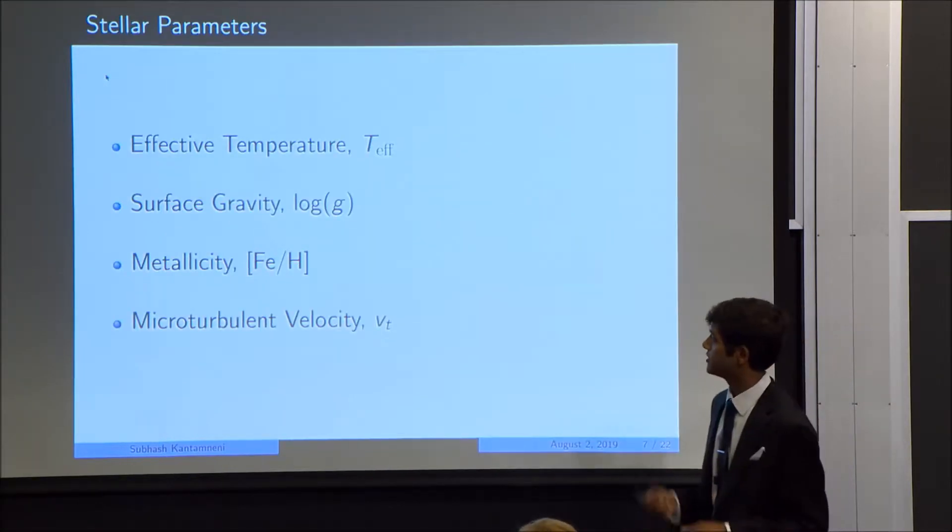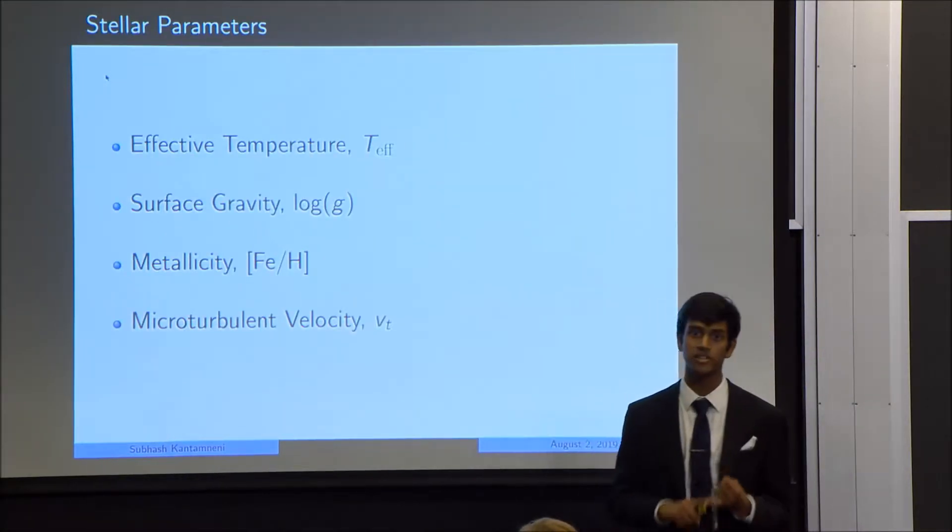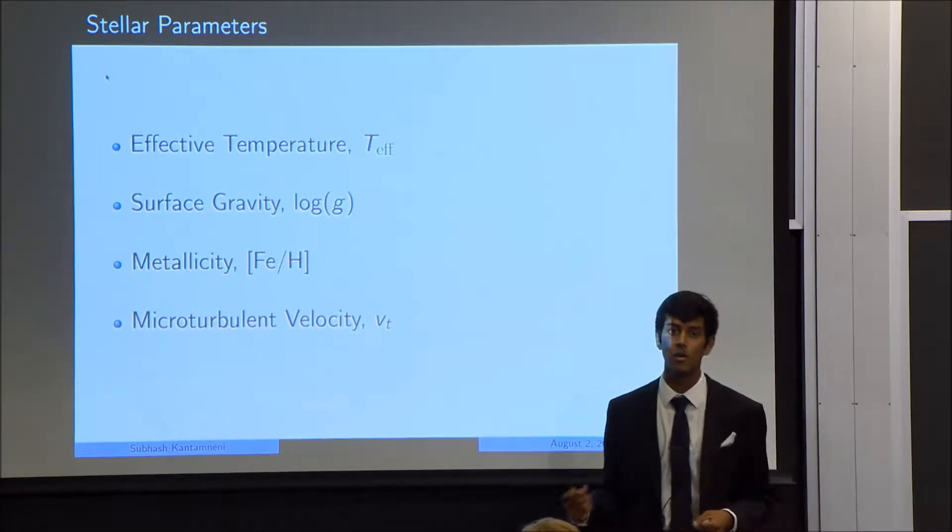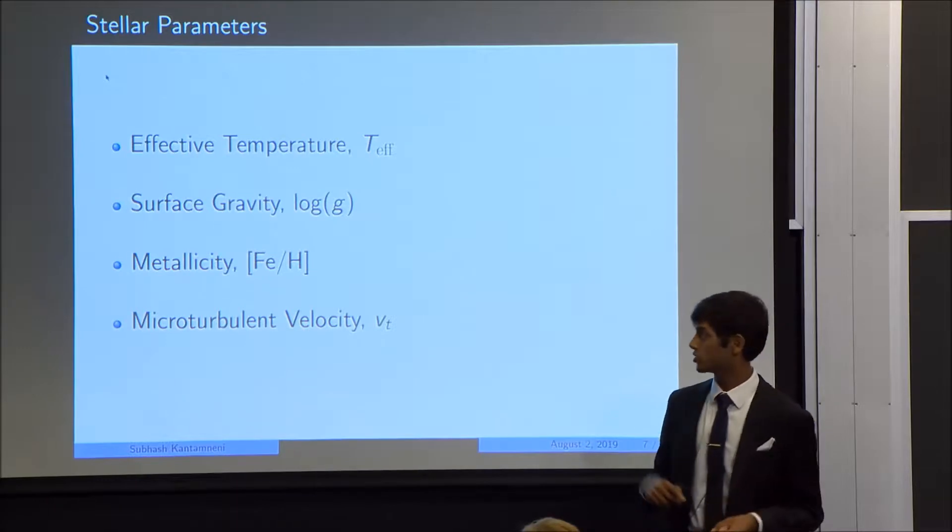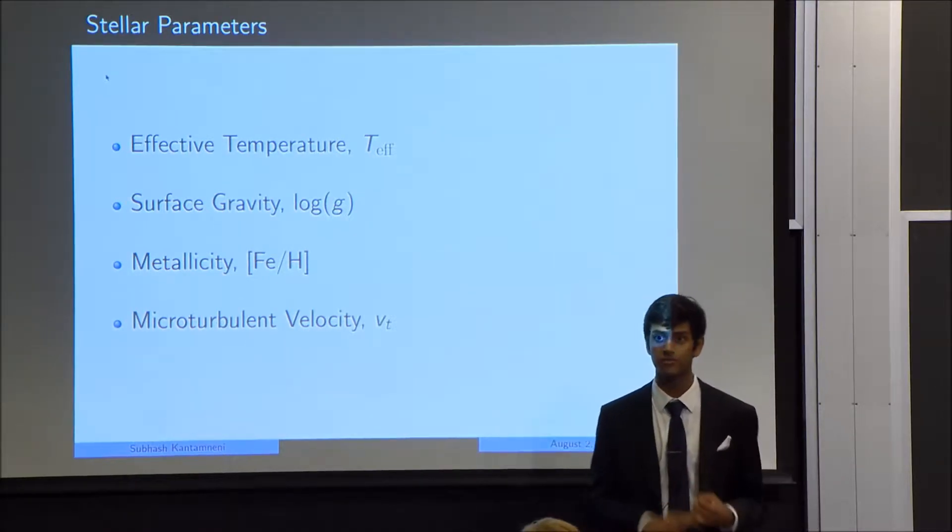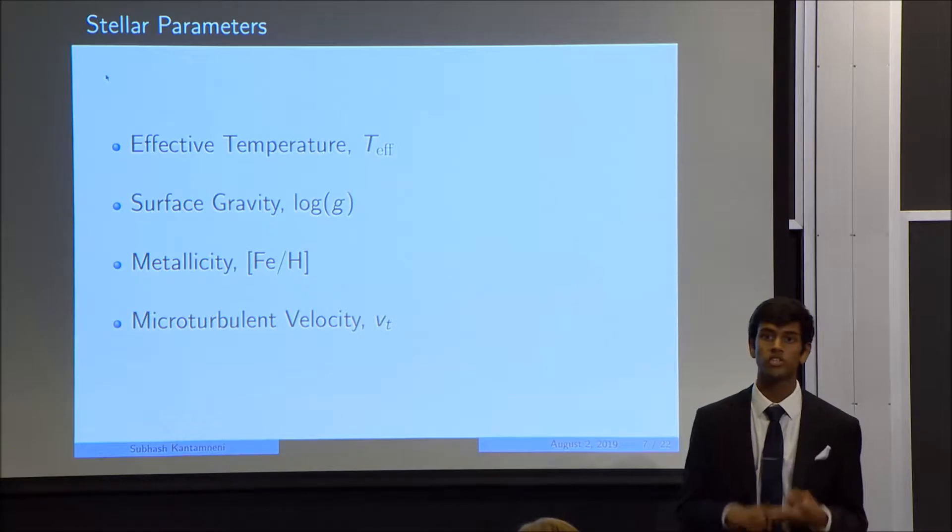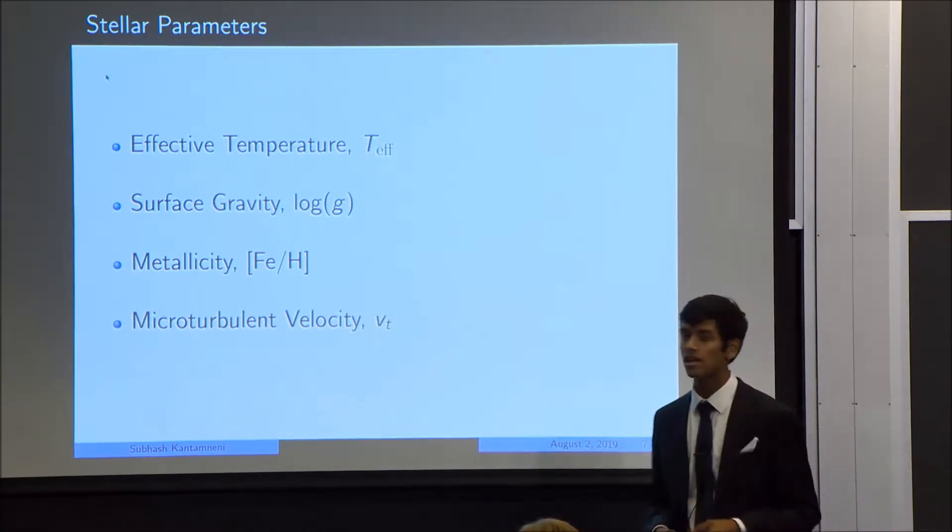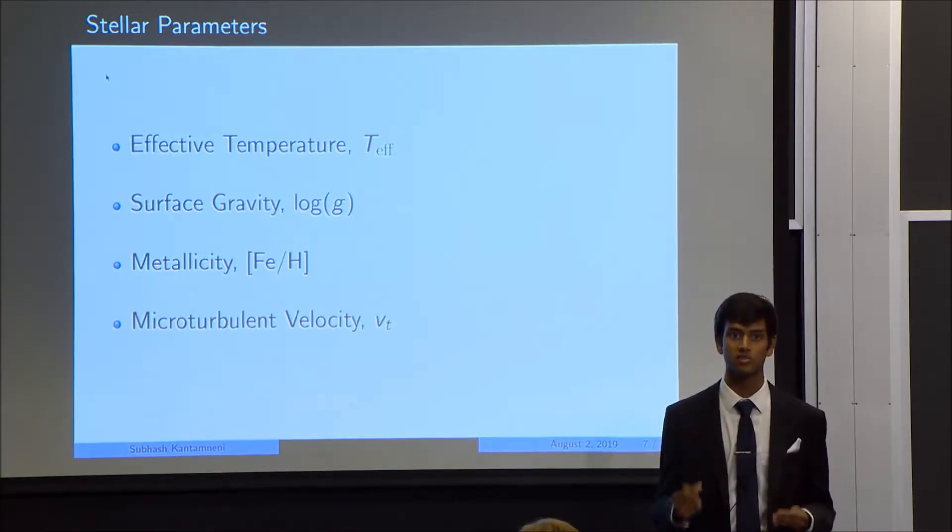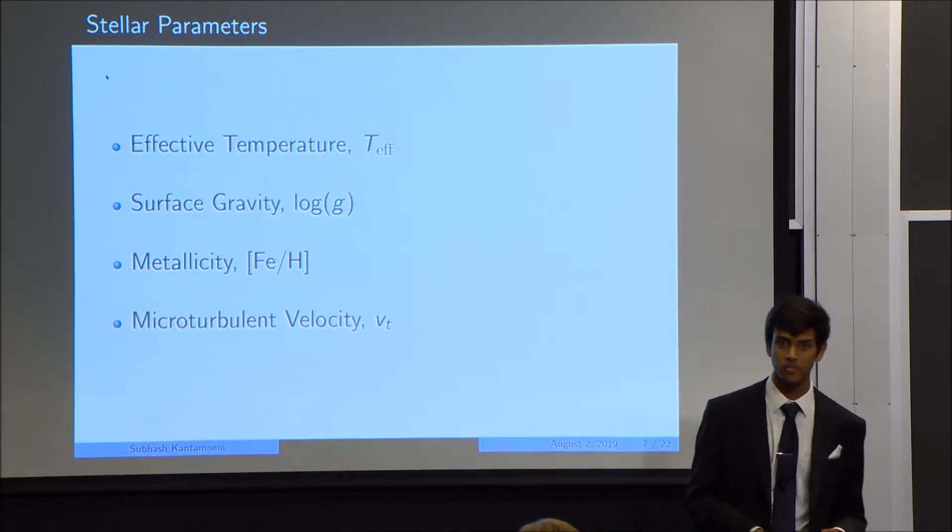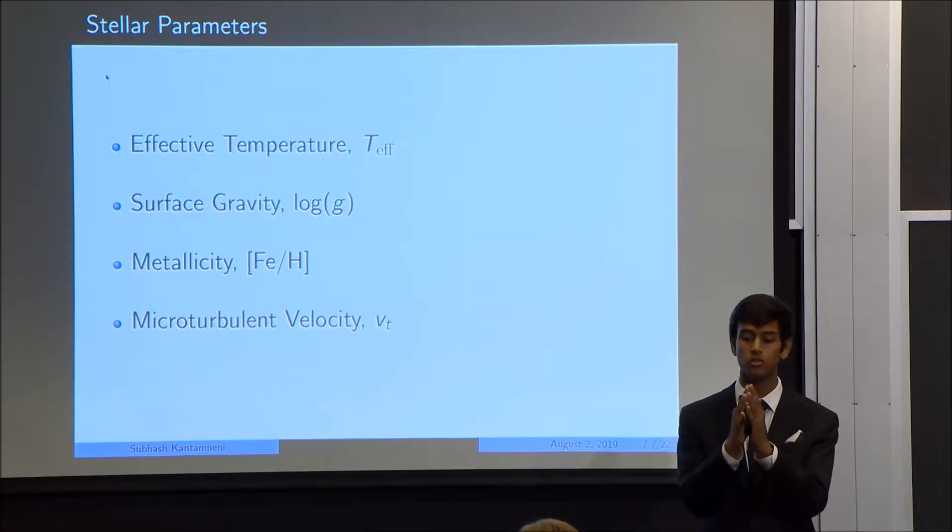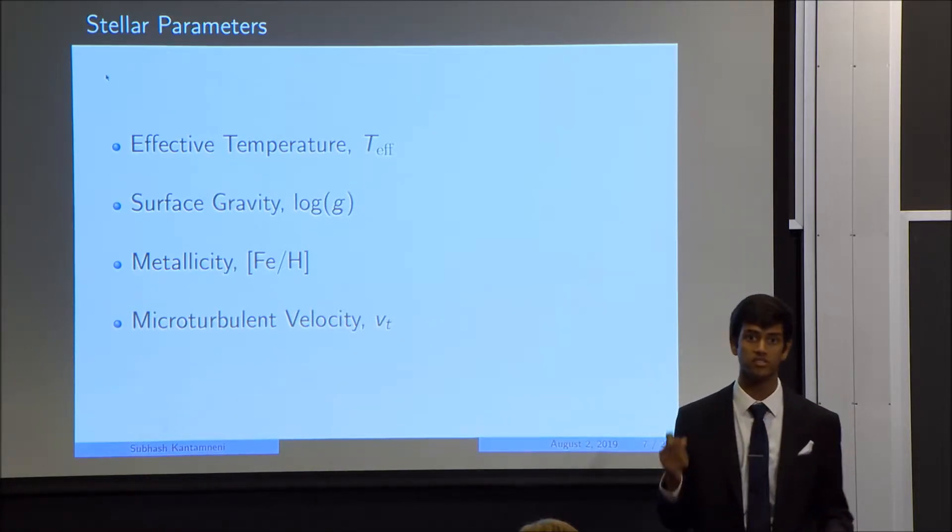So this NLTE stellar model takes in its parameters the observed spectroscopic data of a star, in addition to the four parameters that define a star. They're shown here: the effective temperature, which is the surface temperature of a star; the surface gravity, which is a measure of the gravitational field strength of the surface of a star; the metallicity, which is a measure of the metallic content of the star, which is approximated by the iron abundance of the star; and the microturbulent velocity, which describes how the layers of a star move with respect to each other. If we compare the observed spectroscopic data to our stellar model for a given set of stellar parameters, we keep changing the stellar parameters until these two models match. And in that way, we can calibrate a star in NLTE.